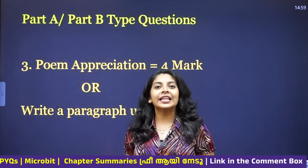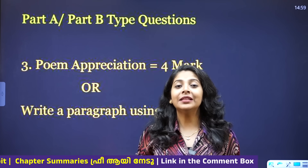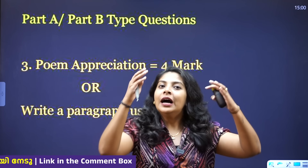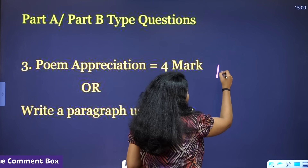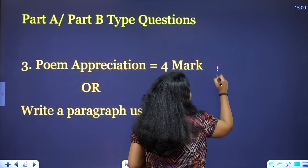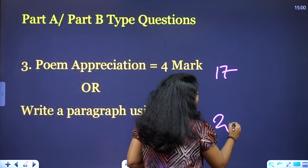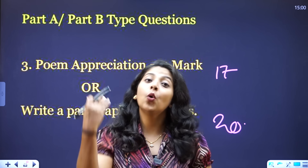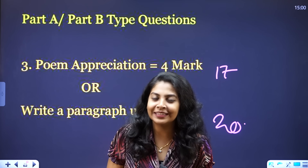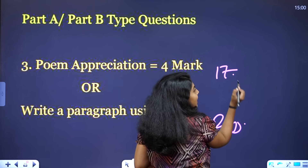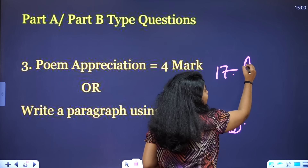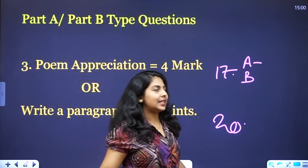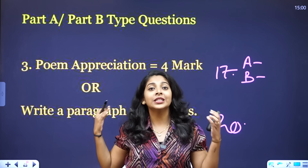If you ask questions about Part A or Part B, the questions are 11. There are 17 and there are 20 questions. If you ask these questions, it will be more than 3. If you ask a question about A and B, you will ask a write-up. There are 17B and a speech.